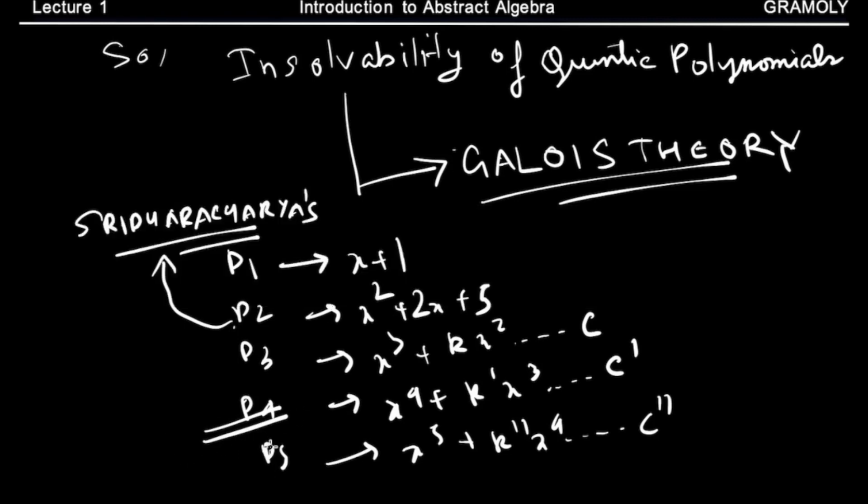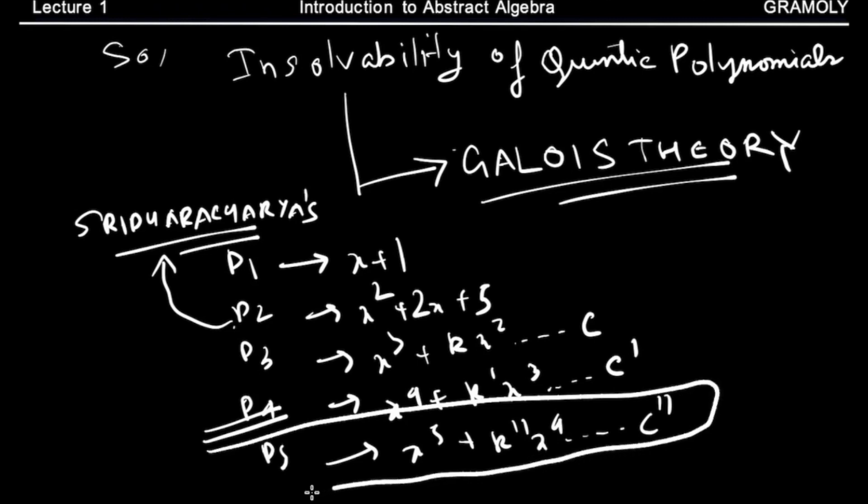Now for degree 5 there is no such formula for the general solution. So this might come into mind, is there a formula which exists for degree 5 polynomials or are they even solvable? Here comes into play abstract algebra.